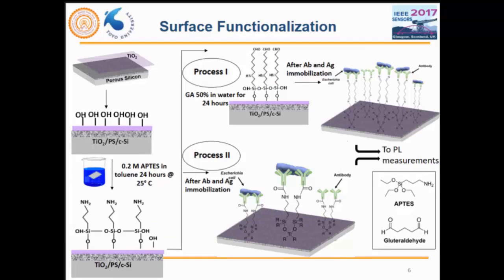After fabrication, for bio purposes we have to functionalize the surface. We clean the surface, wash it with water and ethanol, and get an OH-terminated surface. Then we treat it with APTES and entolin for 24 hours, and what we get in the end is an amine-terminated group. The device is then taken through two processes. In the first process, we further expose it to glutaraldehyde and then to the antibody — attaching a linker where carboxyl groups on top combine with the antibody.